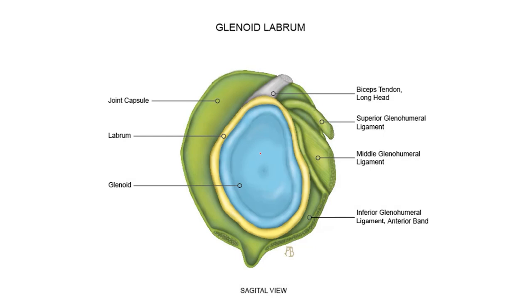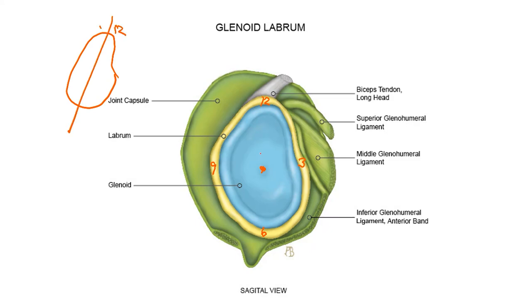Dr. P here. Sagittal view of the shoulder, talking SLAP lesions. Let's start out by getting our bearings — you're looking into the glenoid cup, and I'm going to put a little dot on the bare area of the glenoid, which is a normal area of thinning. This will serve as our reference point for our clock. Up top, we've got 12 o'clock, anterior mid is 3 o'clock, 6 o'clock on the bottom, and 9 o'clock over here. If the cup is tilted, the long axis of the glenoid defines your 12 o'clock.